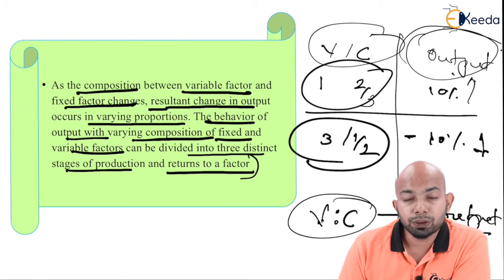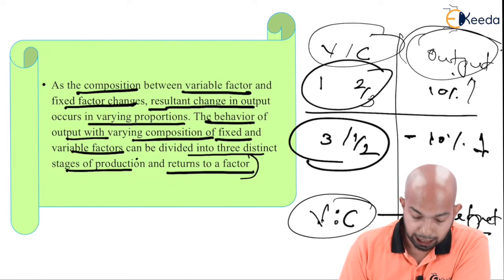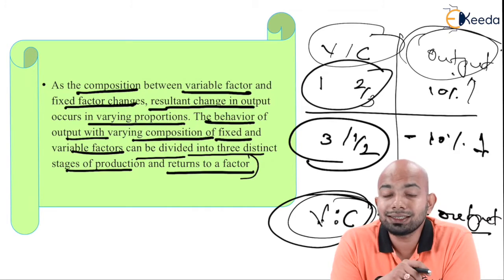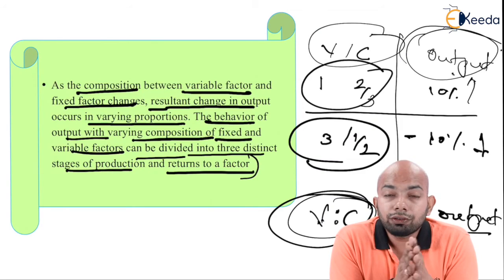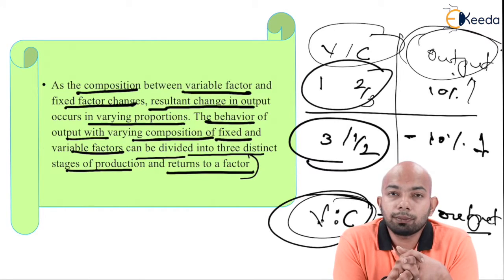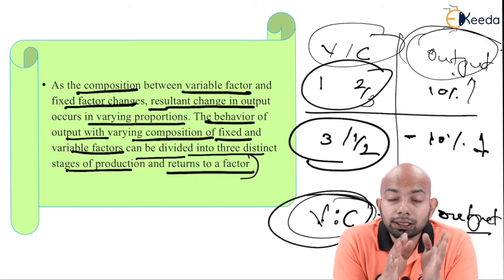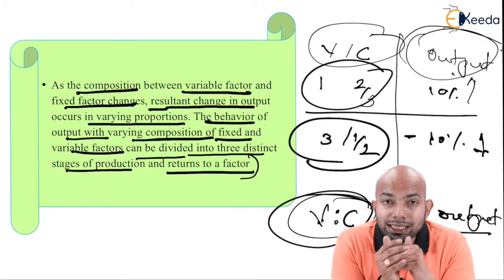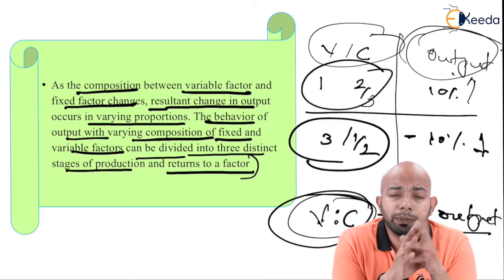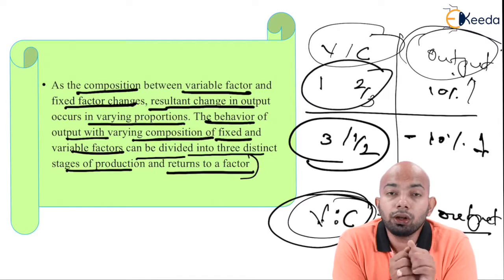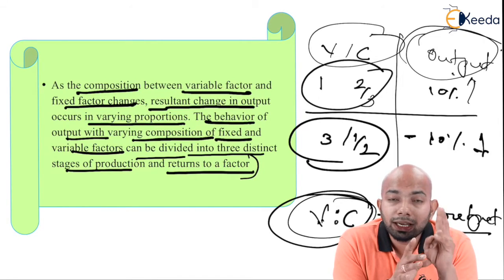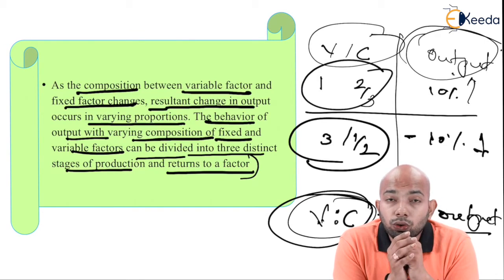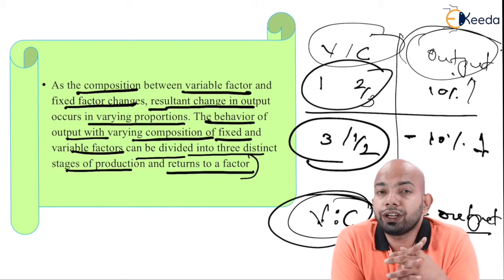The behavior of output with varying compositions of fixed and variable factors can be divided into three distinct stages of production and returns of factor. The proportion between variable and constant will directly affect the output. This composition can be divided into three stages of production, which we will be explaining in the next video, whereby we will discuss how exactly the production function works and what those three distinct stages are.